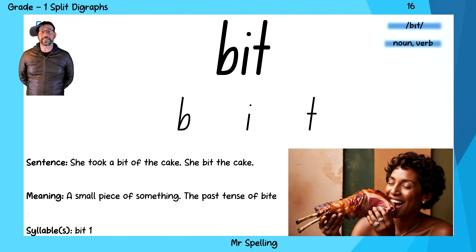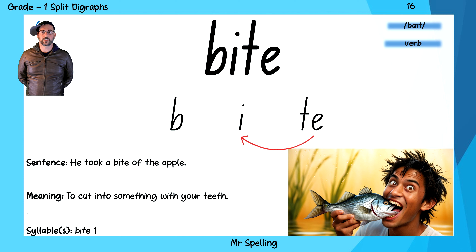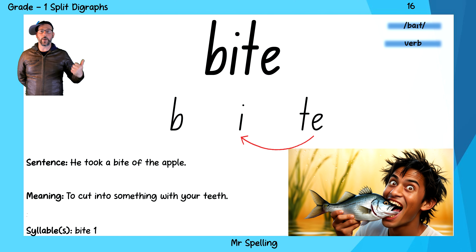The next word on our list is the word bit. I have a bit of cake, or I bit into the cake. And the sounds of bit are B, I, T — bit. And if you put an E on the end of bit, it becomes the word bite. I took a bite out of the cake. Bite. And the sounds of bite are B, I, T — bite.